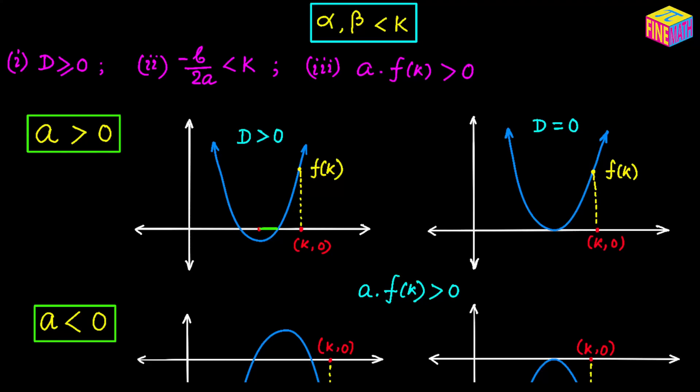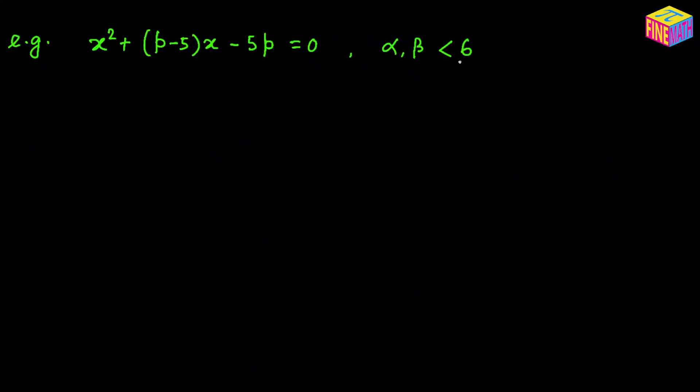Let's take an example. We have the quadratic equation x² + (p−5)x − 5p = 0, where p is an unknown. We need to find the values of p for which both roots of this quadratic equation are less than positive 6.